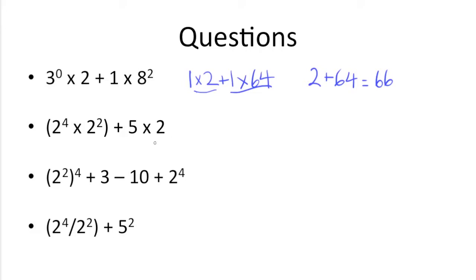Next up, we have 2 to the 4th power times 2 squared in parentheses plus 5 times 2. So the first thing we need to do is everything in the parentheses. And here we have exponents, so we need to do those first within the parentheses.